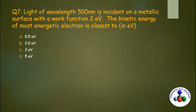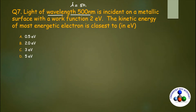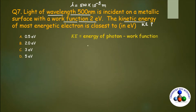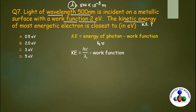Last question: light of wavelength 500 nanometers is incident on a metallic surface with a work function of 2 electron volts. The kinetic energy of the most energetic electron is closest to? λ = 500 nm = 500 × 10⁻⁹ m is given, work function = 2 eV. We need to calculate KE = hc/λ − work function. Since the answer is in electron volts, we need Planck's constant in eV·s.